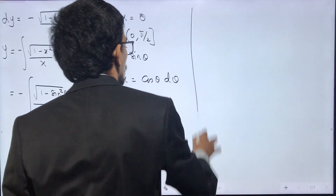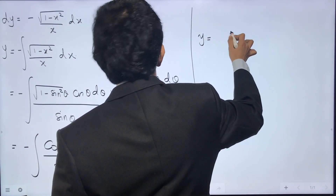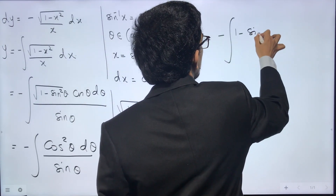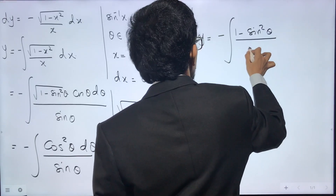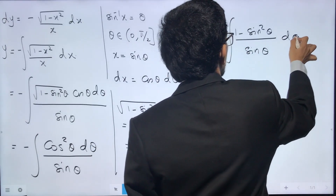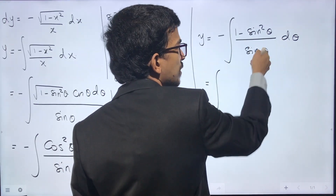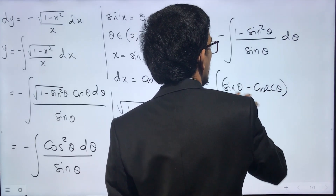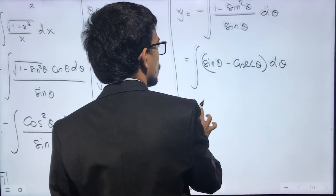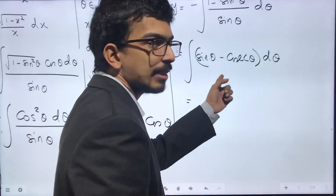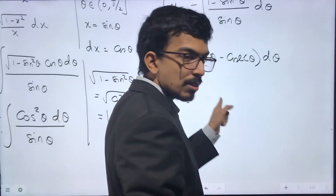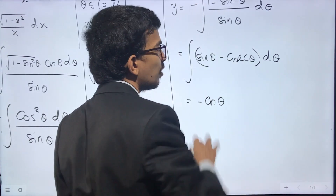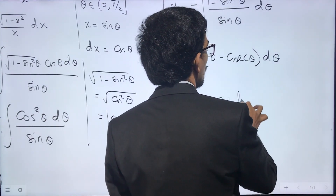Replace cos²θ with 1 − sin²θ: −∫(1 − sin²θ)/sin θ dθ = ∫(sin²θ − 1)/sin θ dθ = ∫(sin θ − cosec θ) dθ. Integrating: −cos θ − log|cosec θ + cot θ| + C.